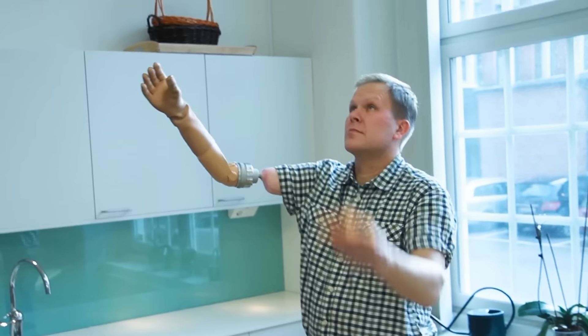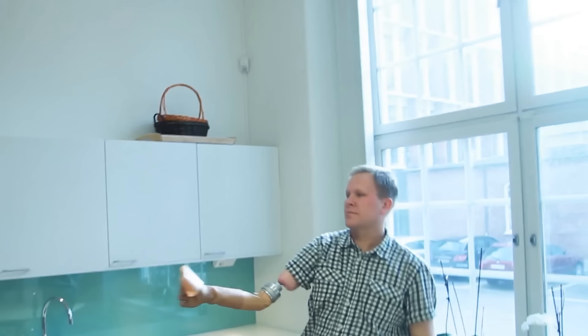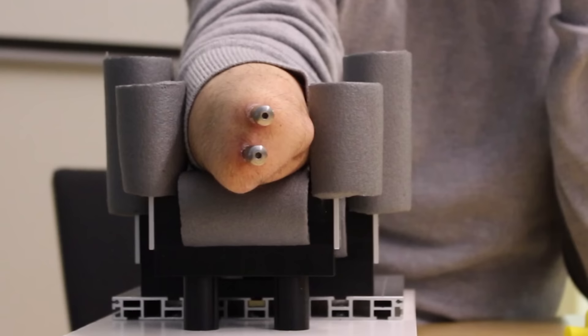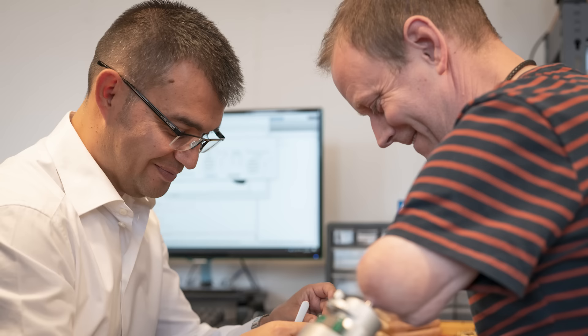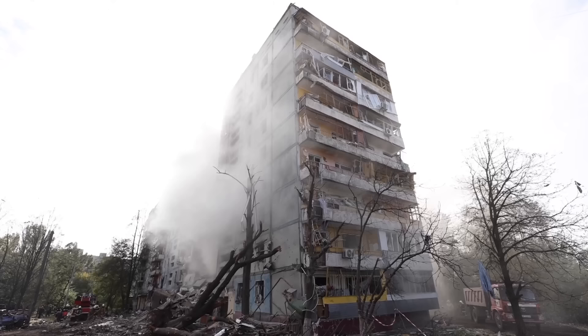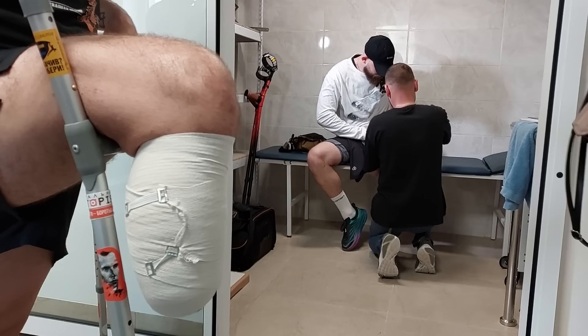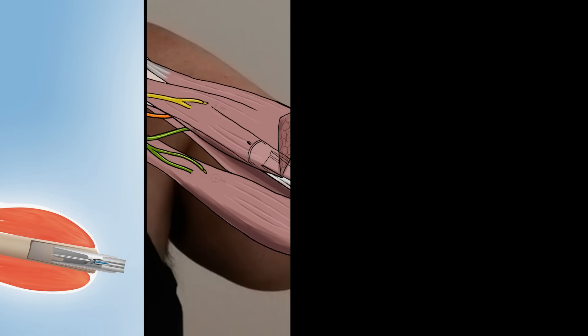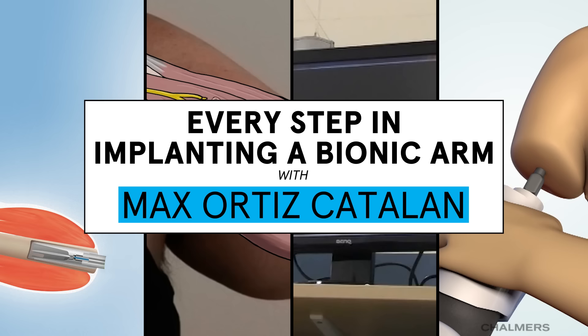You're looking at a game changer in prosthetics. The only one today using electrodes implanted in the nerves and to have sensation. The developer of this bionic system is speaking to us from Ukraine, where war has led to a crisis. There is more than 15,000 people with amputations in the country. Let's walk through every step needed to implant his bionic arm into a patient.